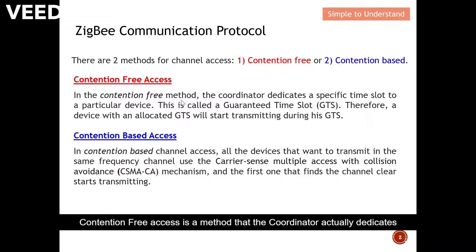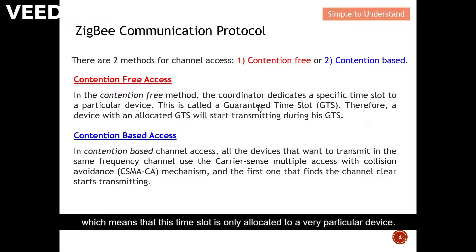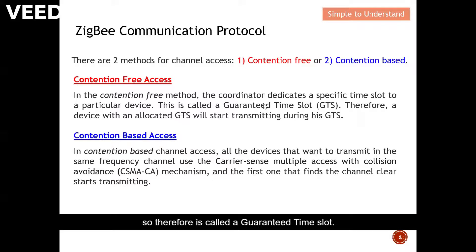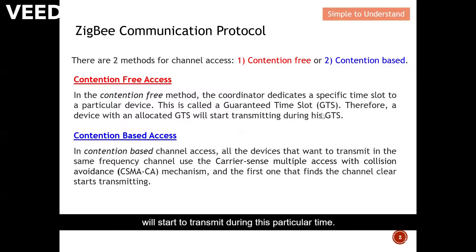Contention-free access is a method where the coordinator actually delegates a specific time slot to a particular device. This is called a Guaranteed Time Slot (GTS), which means that this time slot is only allocated to a very particular device — no one is going to share this time slot. A device with an allocated guaranteed time slot will start to transmit during that particular time.